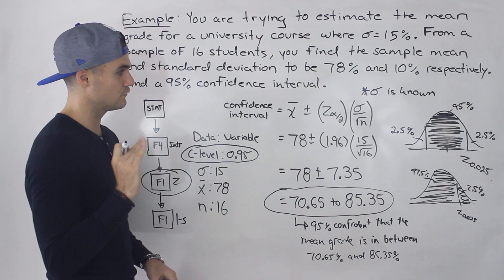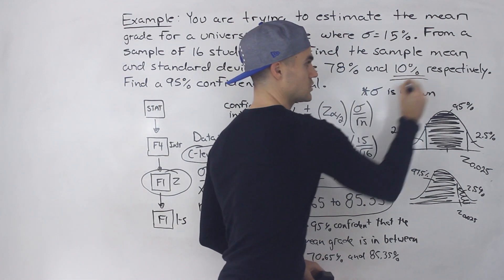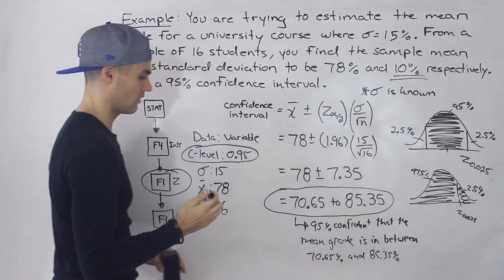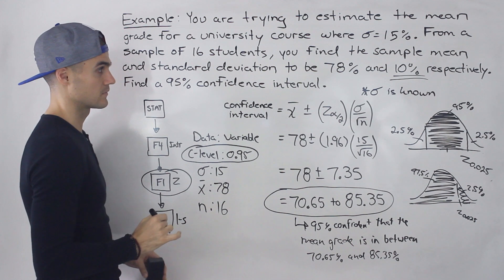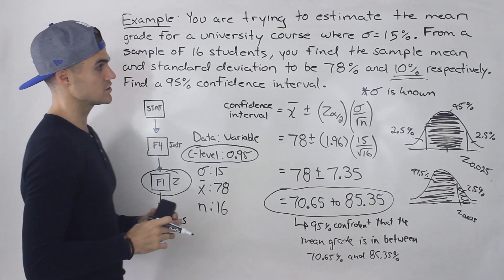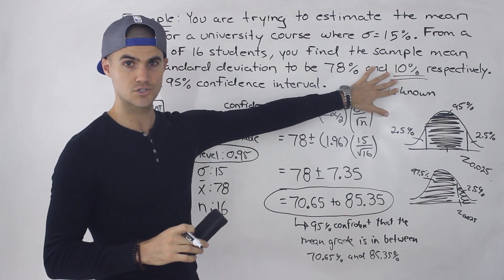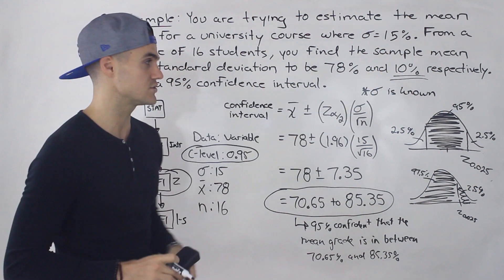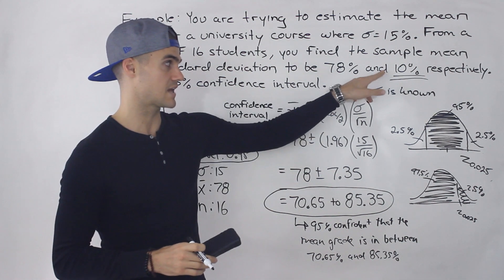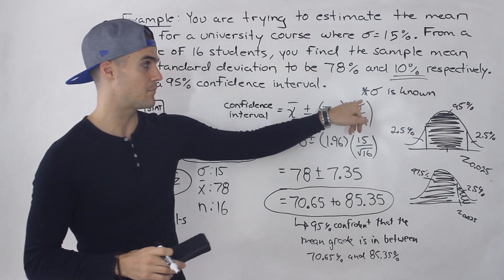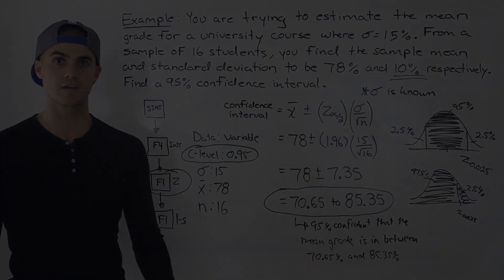One last thing to note: the sample standard deviation S = 10% wasn't used at all in this question. When the population standard deviation is known, the sample standard deviation is not used — sometimes it's given, sometimes it's not, but either way you don't need it. You will be using the sample standard deviation when the population standard deviation is unknown, and I'll show you how to do that in the next video.